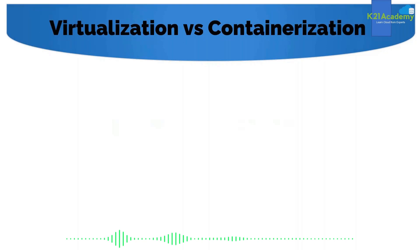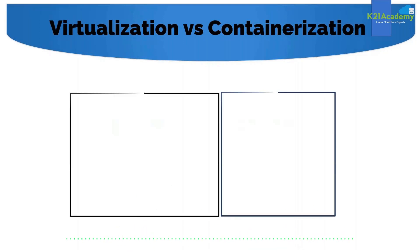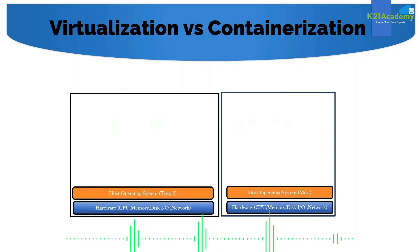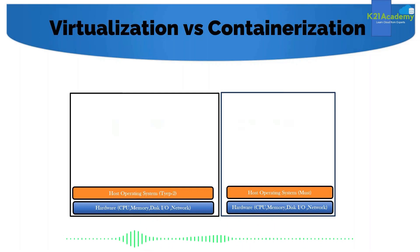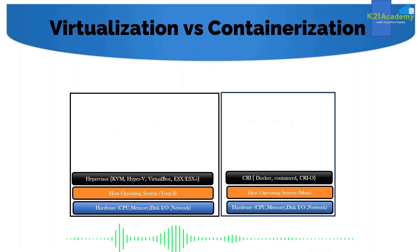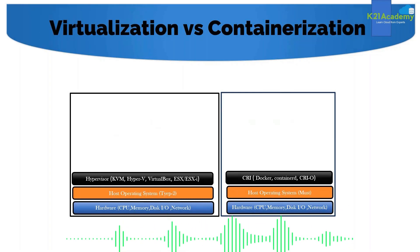The difference between virtualization and containerization in terms of a pictorial view: the first layer is hardware, the second layer is the host operating system, and the third layer is what makes the difference. In virtualization, we go with the hypervisor; in containerization, we install the CRI.